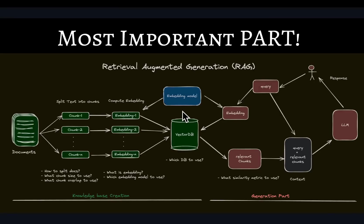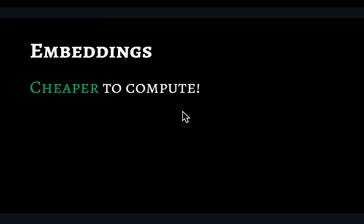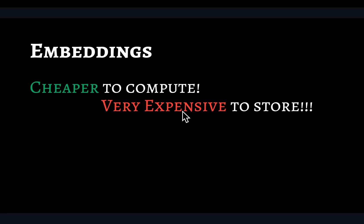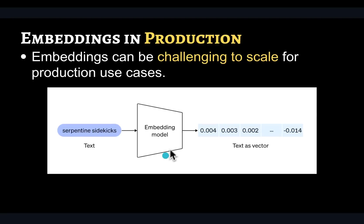Embeddings are one of the most important components of any production-ready RAG system, but usually get the least amount of attention. They are very cheap to compute compared to the LLM calls you're making as part of the RAG pipeline, but they are very expensive to store, and that's why storage has to be a very important consideration if you are putting any RAG system in production, because it poses its own challenges when it comes to scale.